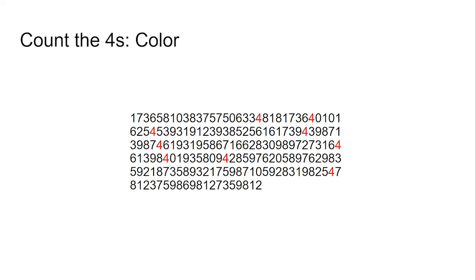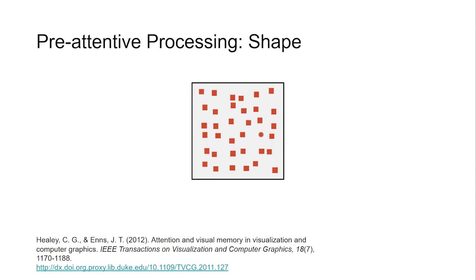Here's another example of pre-attentive processing. Again, it uses change of color to allow us to pre-attentively process. If I ask you to look for the red circle, this task is quite easy because the shape has been manipulated in a way that is also pre-attentive.